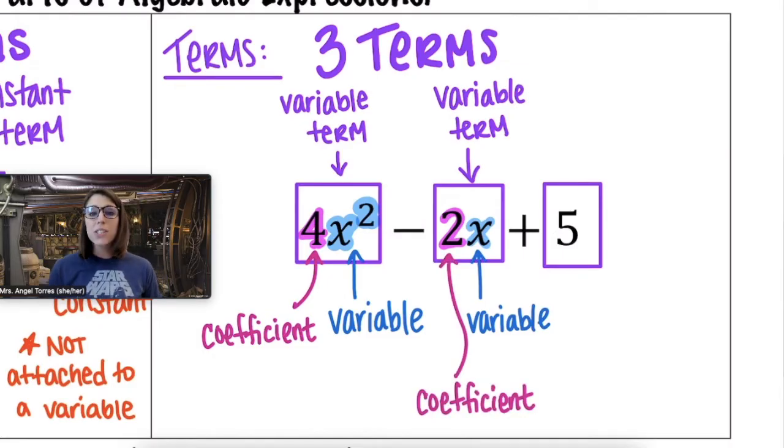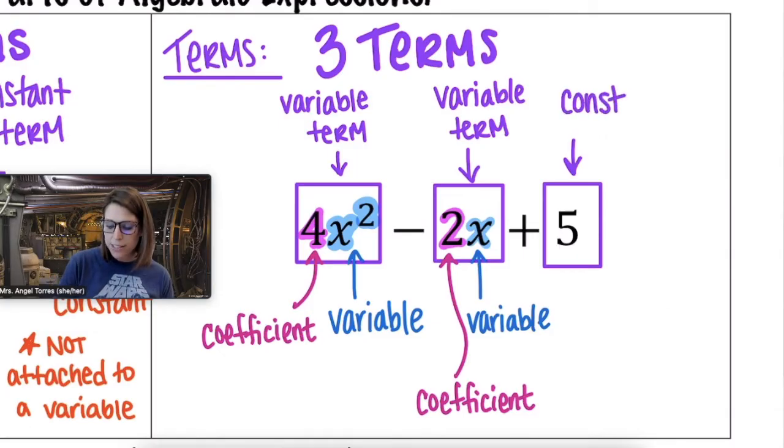Our last term is 5. 5 is just an integer. It's not going to change or be affected by x. We call this the constant term.